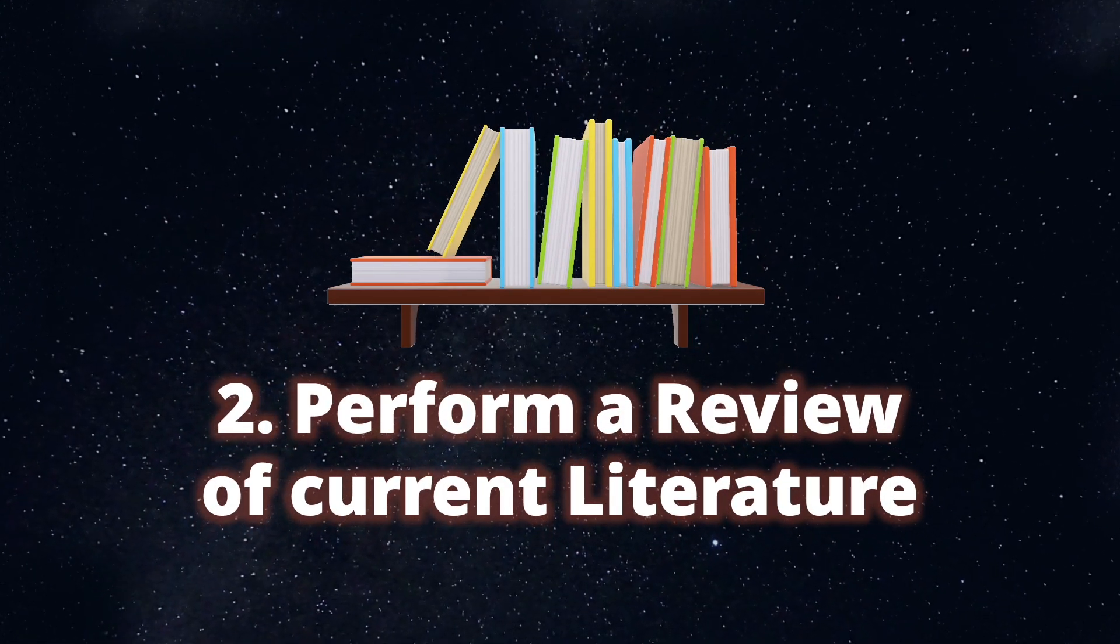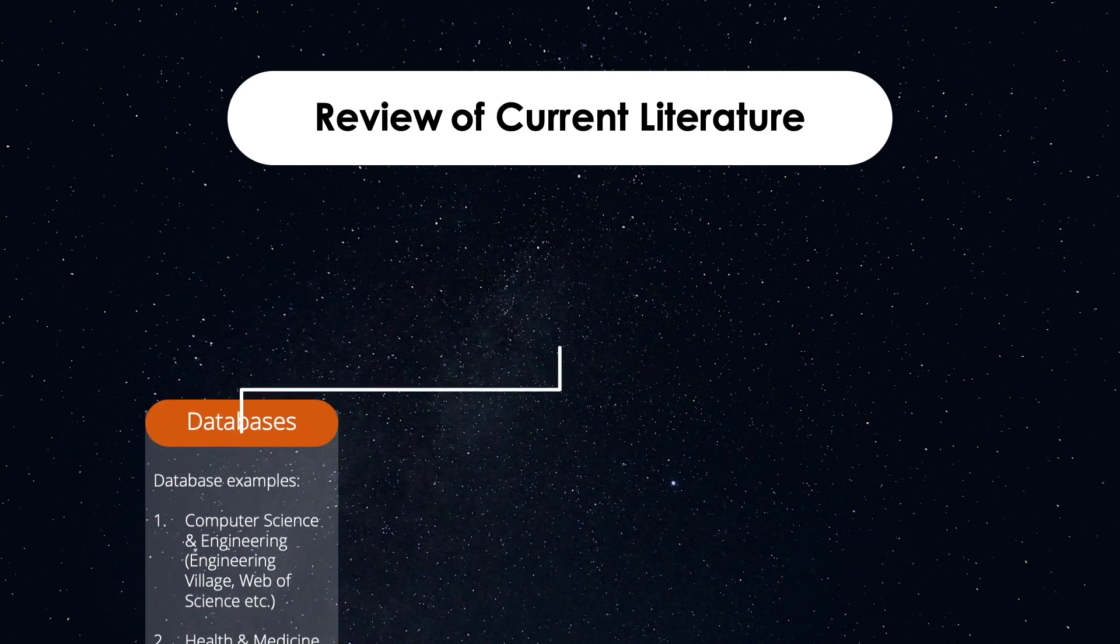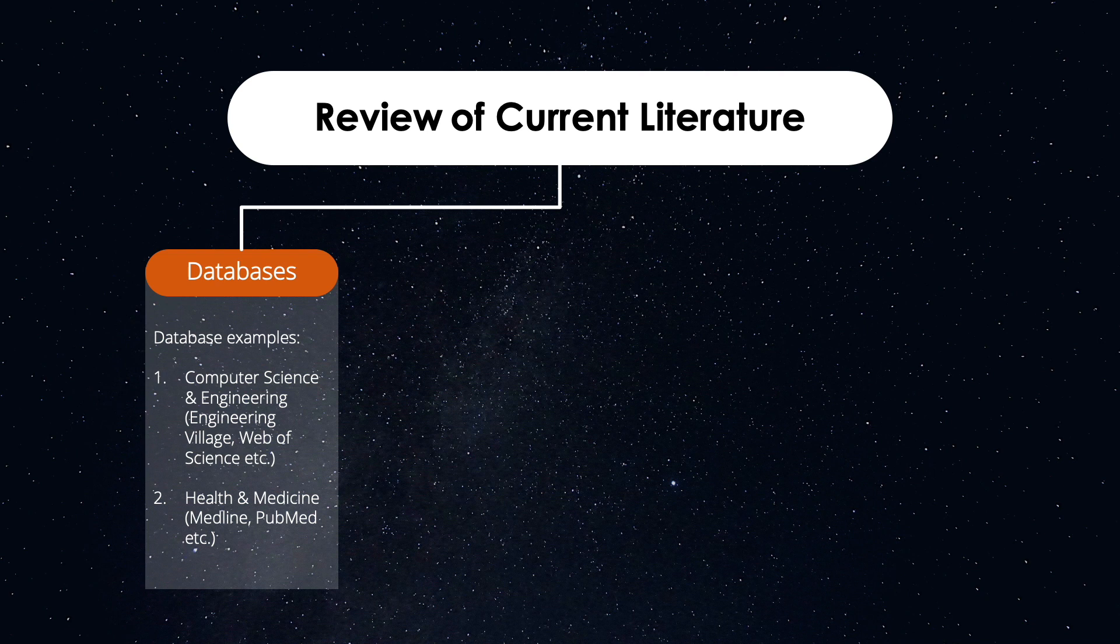Secondly, perform a review of current literature. When performing your review of current literature, you should first make a list of all the research databases relevant to your topic. There are databases for computer science and engineering, such as Engineering Village or Web of Science, or databases for health and medicine, such as Medline or PubMed. Your university library website will list all of the databases available to you, which you can access using your school email and password. Comment down below if you would like a tutorial on how to efficiently organize and sort your literature sources during your literature review.